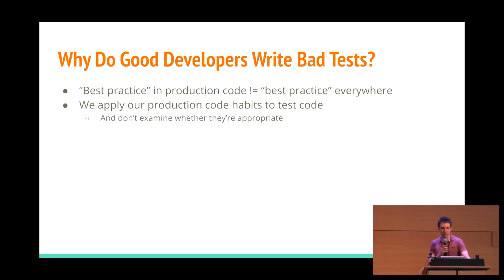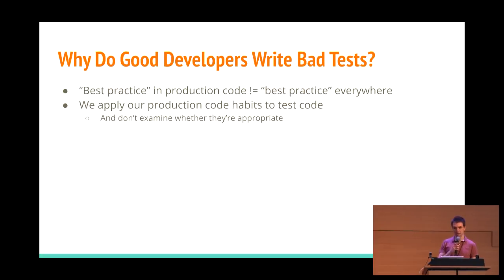A problem that a lot of us have is that we learn a lot of these good practices in production code. We learn to refactor our code to eliminate redundancy. We learn to write small, tightly-scoped functions. We've been told they're good practices — in fact, we're told they're the best practices. So when it comes time to write tests, we don't really question them. But in a lot of cases, applying these best practices from production code actually leads to worse test code. Throughout this talk, I want to give you a few examples of how that can happen.